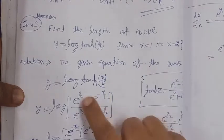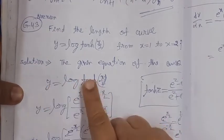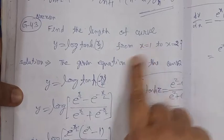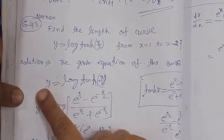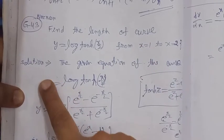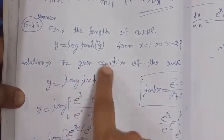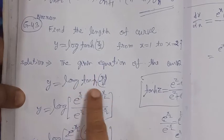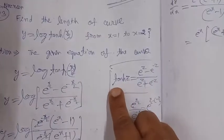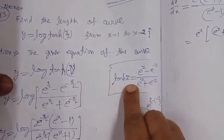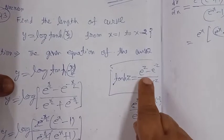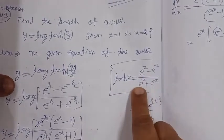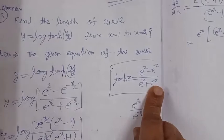When differentiating tanh, difficulty arises because we need the length of the curve, for which we need dy/dx — that is, we have to differentiate y. So to remove this hyperbolic form, we use the formula: tanh(z) = (e^z − e^(−z)) / (e^z + e^(−z)).